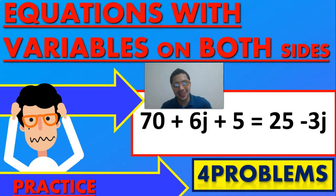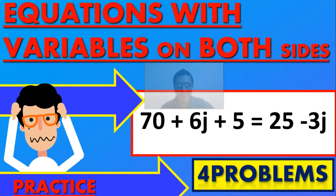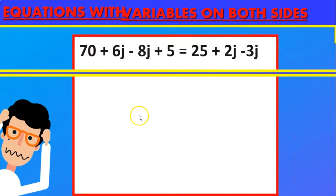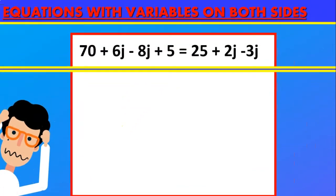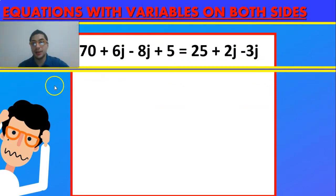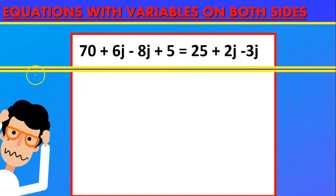Welcome back to today's video in which we're going to be solving a practice of equations with variables on both sides. The basic key in order to solve these problems is remembering that whenever you have variables on two sides, everything that has letters you're going to move to the left side or the right side, and then you move everything that is a coefficient to the other side.